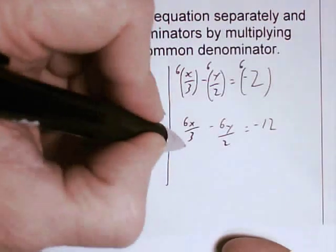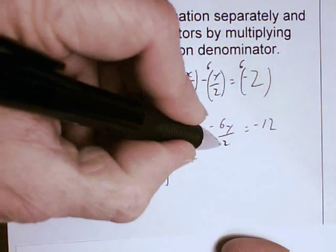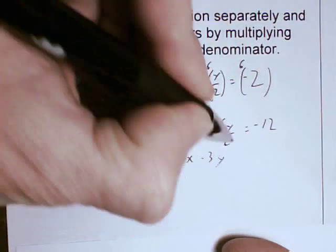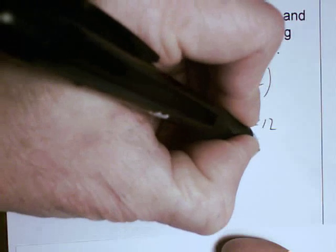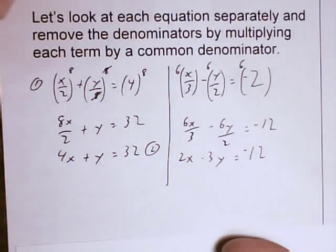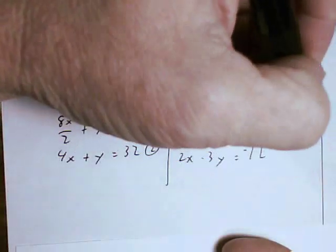I can divide 3 by 3 here. That gives me 2x. I can divide that by 2 minus 3y equals negative 12. I'm going to call that equation 3.